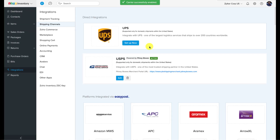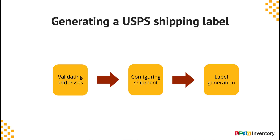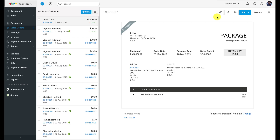Now that we have integrated USPS with Zoho Inventory, let's see how we can generate a shipping label quickly. Generating a USPS shipping label. I'm going to ship one of the yet-to-be-shipped packages on this particular sales order.